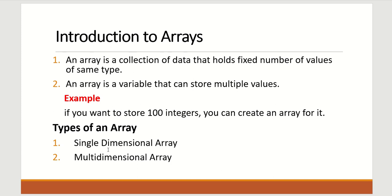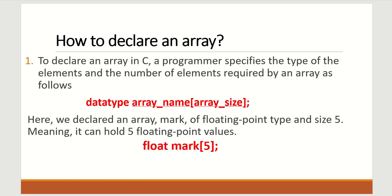The types of arrays are: we can have a single-dimensional array and we can have a multi-dimensional array. Now, how to declare an array in C programming. To declare an array, a programmer specifies the type of elements and the number of elements required by an array as follows.